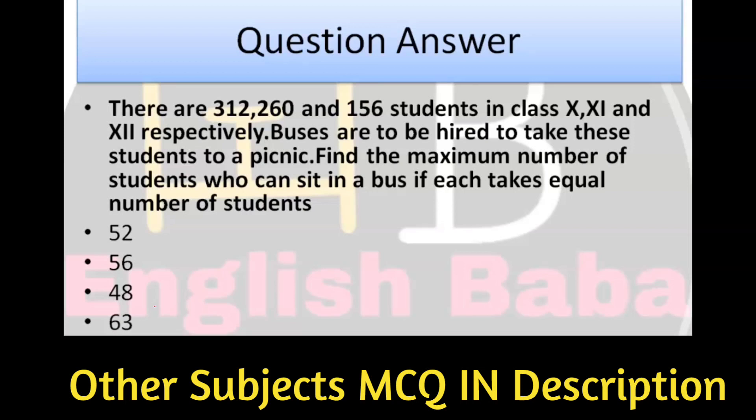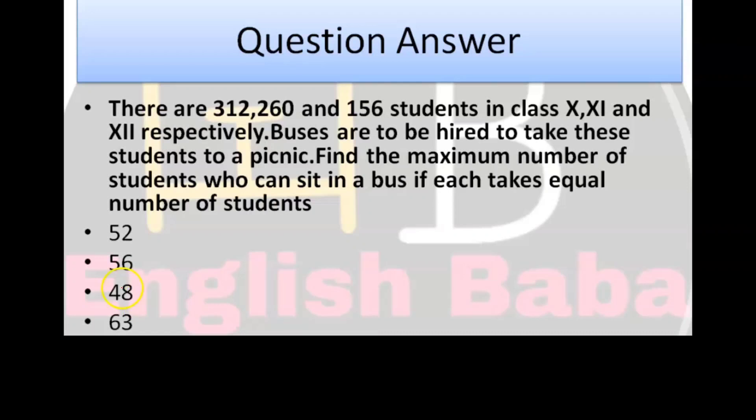There are 312, 260 and 156 students in class 10th, 11th and 12th. Buses are to be hired to take these students to a picnic. Find the maximum number of students who can sit in a bus if each takes equal number of students. You know, whenever we have maximum, what we have to do is we have to take the HCF. So, the HCF is 312, 260 and 156. Solve it, you will get the answer as option number A, 52.